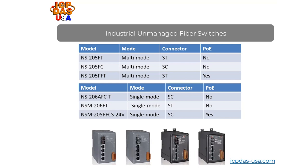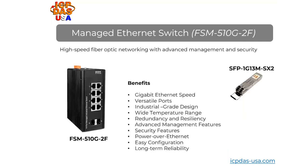Industrial fiber switches are used in manufacturing plants, oil and gas facilities, transportation systems, and power utilities. They provide a cost-effective, reliable solution for extending network connectivity and enhance data transmission in industrial automation and control systems. Our FSM510G-2F has eight 10/100/1000 Base-T Ethernet ports and two SFP fiber module slots. We offer multi-mode and single-mode SFP module network adapters. These switches provide port security, bandwidth control, quality of service, and DHCP option 82, which prevents DHCP client requests from untrusted sources to improve security.